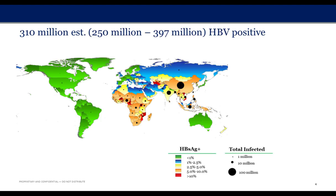As most of you will know, Hepatitis B is a significant health problem globally, with an estimated 2 billion people having been exposed to Hepatitis B and about 300 million people chronically infected worldwide. As you can see from this slide, there's an uneven distribution of Hepatitis B prevalence, with higher prevalence in Asia and sub-Saharan Africa relative to North and South America and Europe.